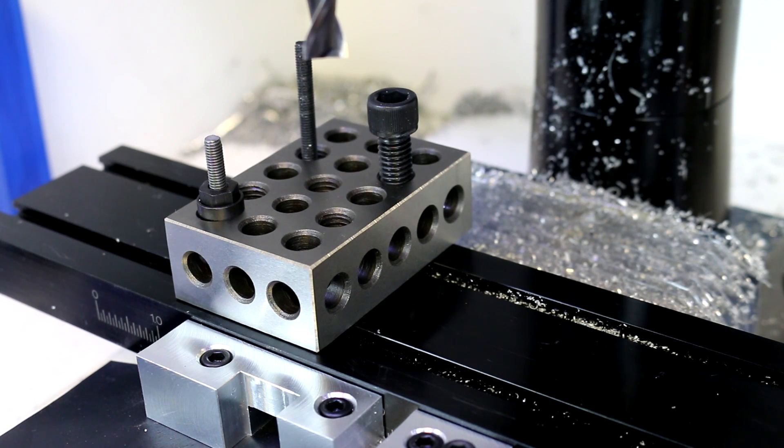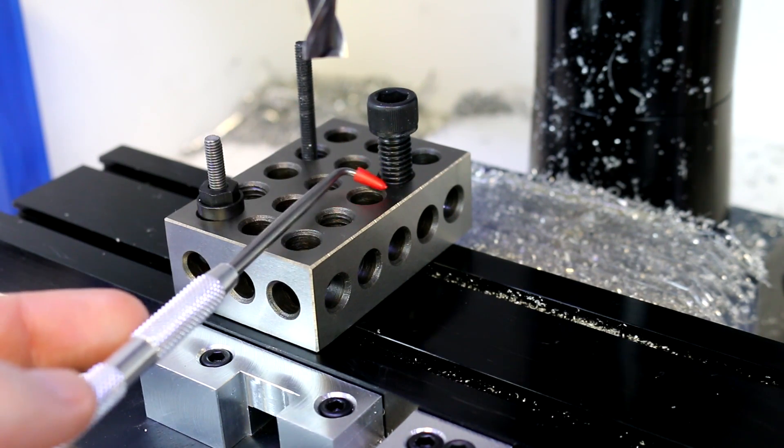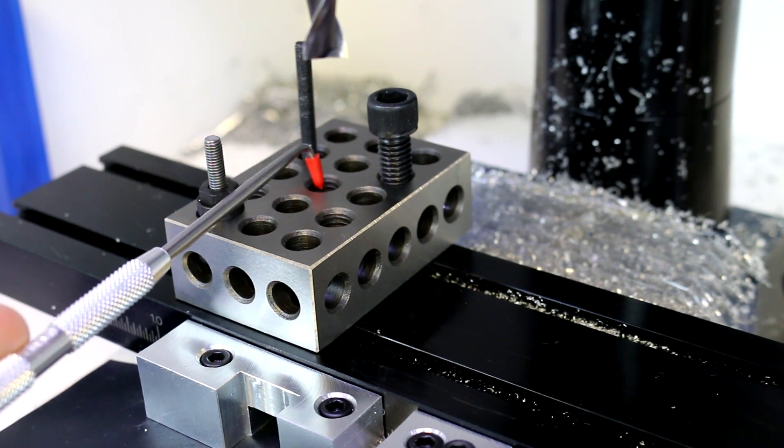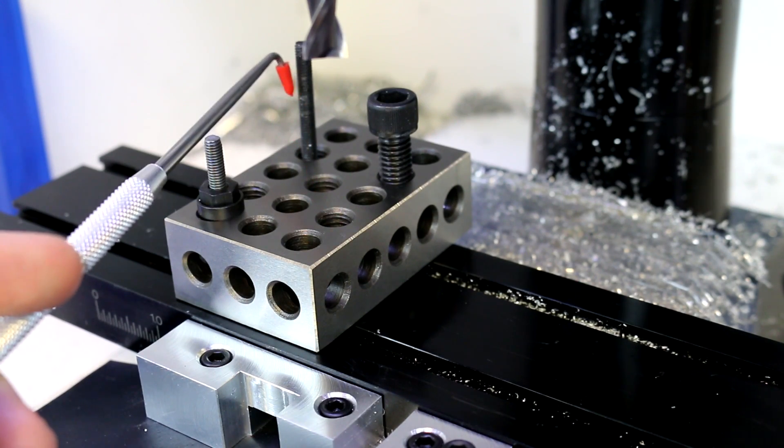In our next mill projects video, we're going to make some fairly simple additions to our 1-2-3 blocks. The blocks, as with most things, are designed to be used on a larger mill. They've got 3/8-16 threaded holes, which for us are way too big. For our machines, we want to use smaller fasteners.